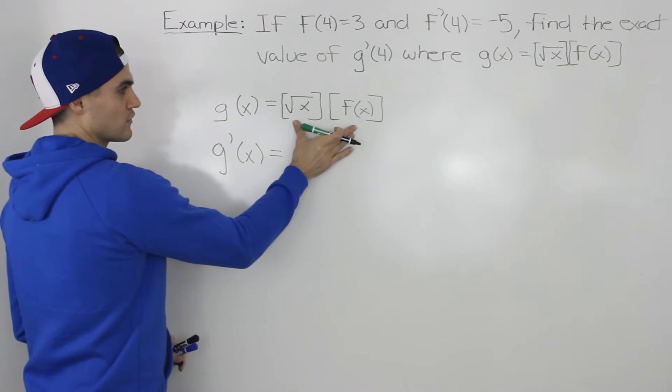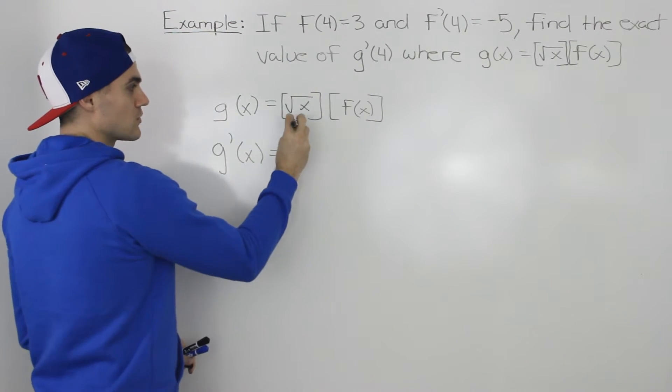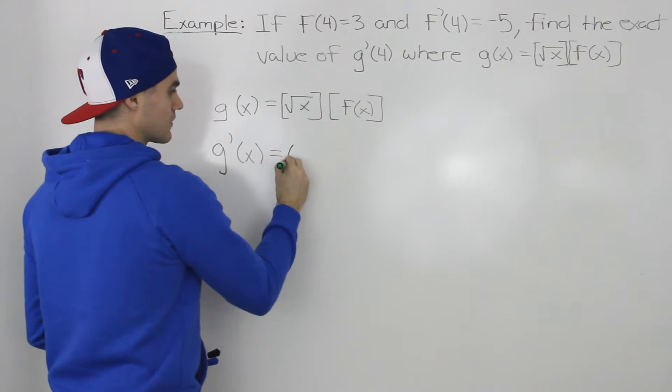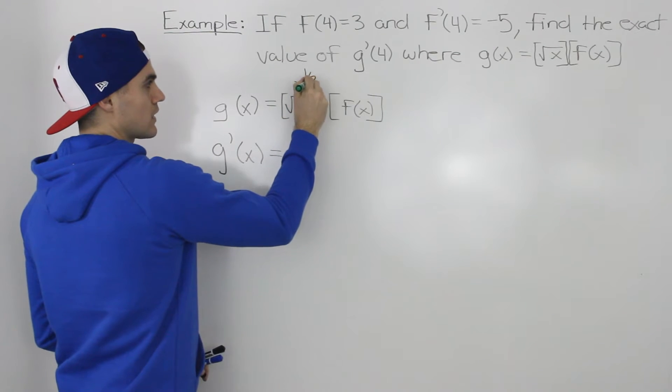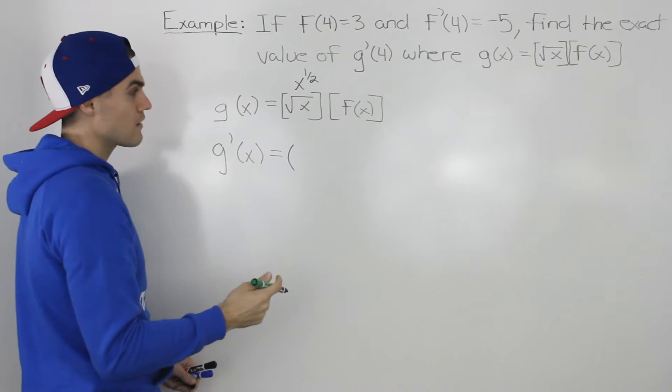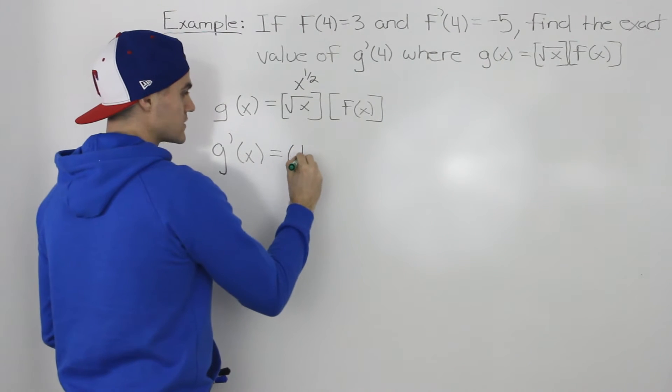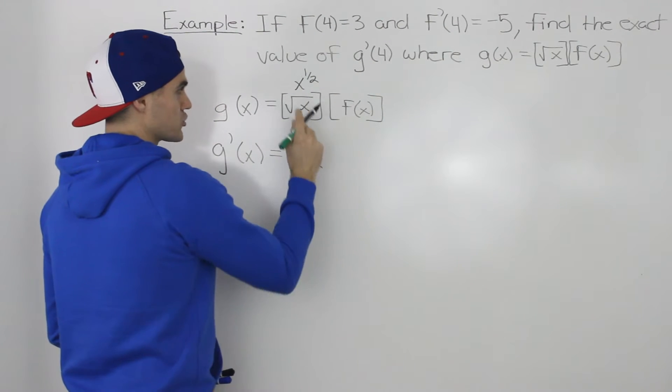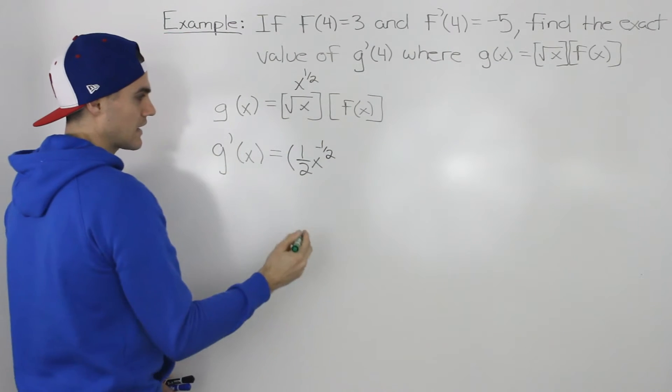To find the derivative of these two functions multiplied by each other using the product rule, we find the derivative of that first function. Now the derivative of the square root of x—the square root of x we can rewrite as x to the power of one-half. So we just apply the power rule on that. We bring the one-half down and then subtract one from the exponent, so one-half minus one gives us negative one-half.